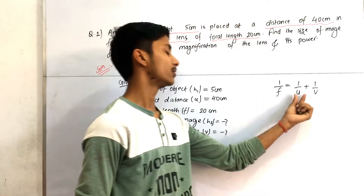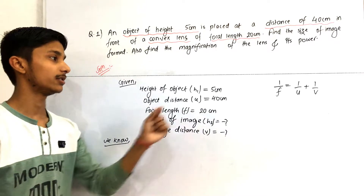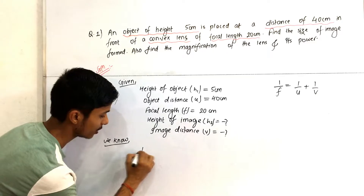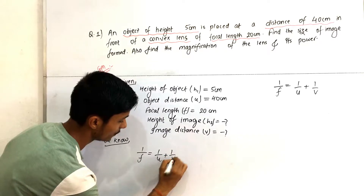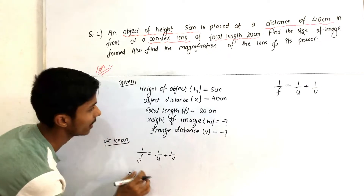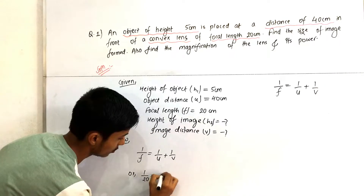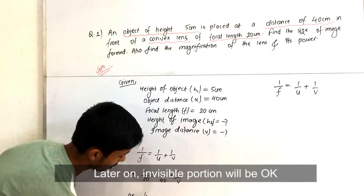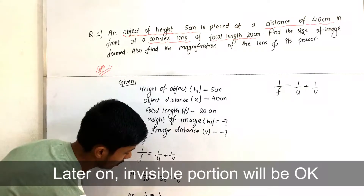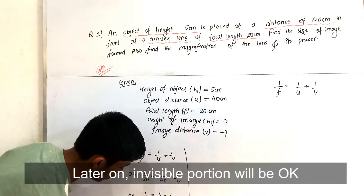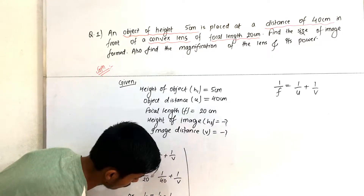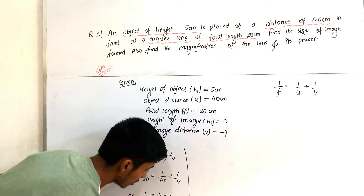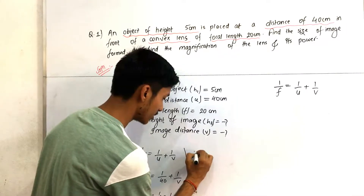Using the formula 1/f = 1/u + 1/v, we substitute: 1/20 = 1/40 + 1/v. From here we find 1/v = 1/20 − 1/40. Taking LCM as 40: 1/v = 2/40 − 1/40 = 1/40. Therefore v = 40 centimeter.